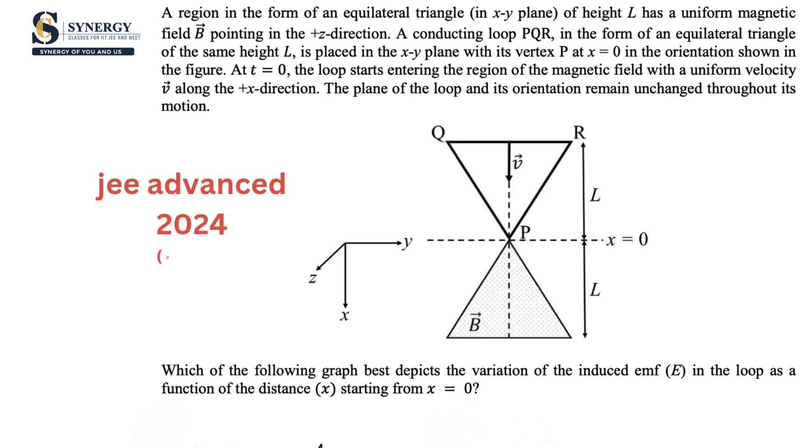Here is a question from JEE Advanced 2024 paper 2 based on graphs. There are two triangular frames. The lower frame, which has magnetic field inside it, is fixed and the upper inverted frame is moving through it.